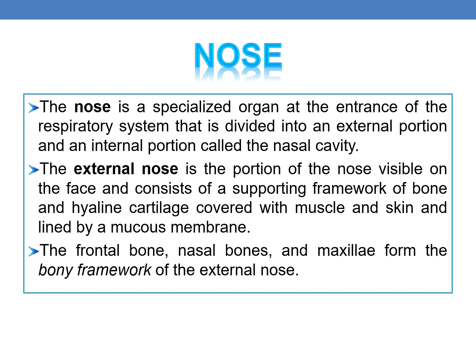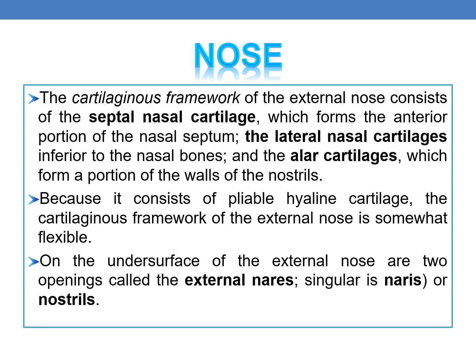The frontal bone, nasal bones, and maxillae form the bony framework of the external nose. The cartilaginous framework of the external nose consists of the septal nasal cartilage, which forms the anterior portion of the nasal septum, the lateral nasal cartilage inferior to the nasal bones, and the alar cartilage, which forms a portion of the walls of the nostrils. Because it consists of pliable hyaline cartilage, the cartilaginous framework of the external nose is somewhat flexible.